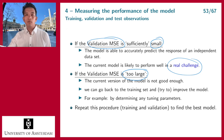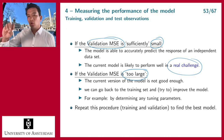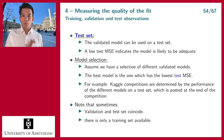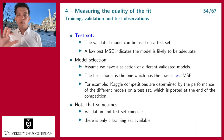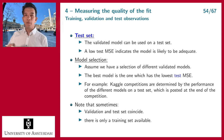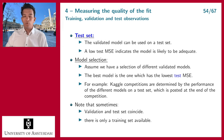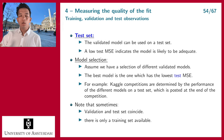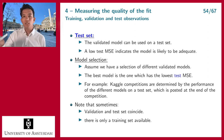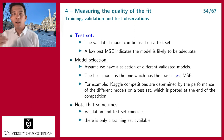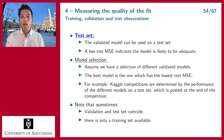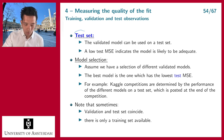We use the training set to build the model, then the validation set to check if it performs well on new data. If not, we go back to the training set, improve the model, and test it again on the validation set. We repeat the training-validation loop until we have a well-validated model — one that performs well both on training data and on new data.